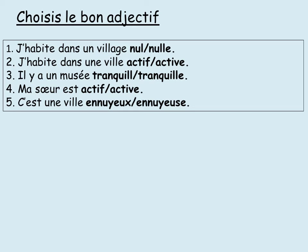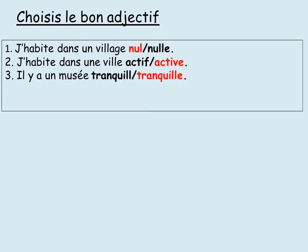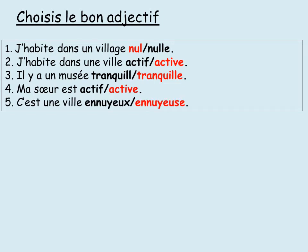On your pieces of paper — choisis le bon adjectif. I've given you two options for numbers one to five; decide which one goes with each sentence by checking whether the noun is masculine or feminine. The answers: J'habite dans un village — nul (masculine). J'habite dans une ville — active (feminine). Il y a un musée — tranquille (same form). Ma soeur est — active (feminine, ma soeur is my sister). C'est une ville — ennuyeuse (feminine). I hope you got them all right.